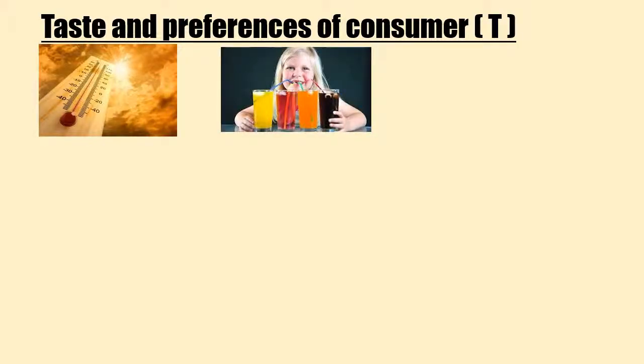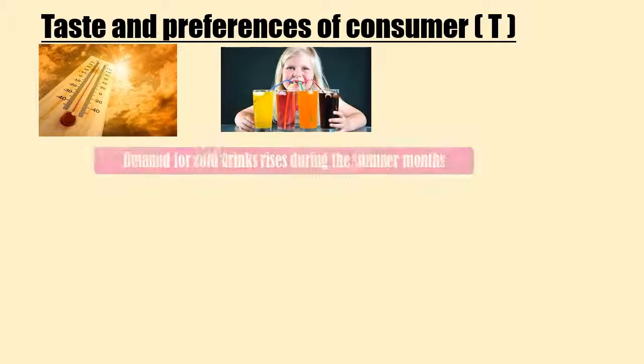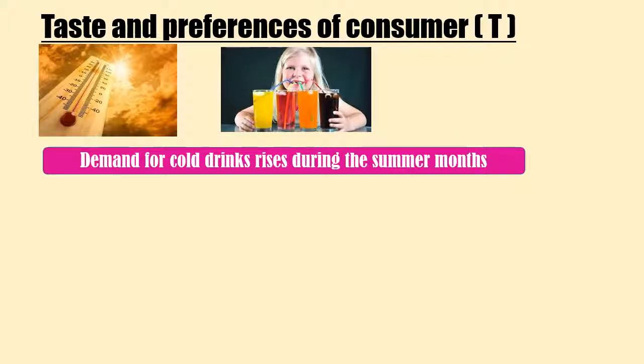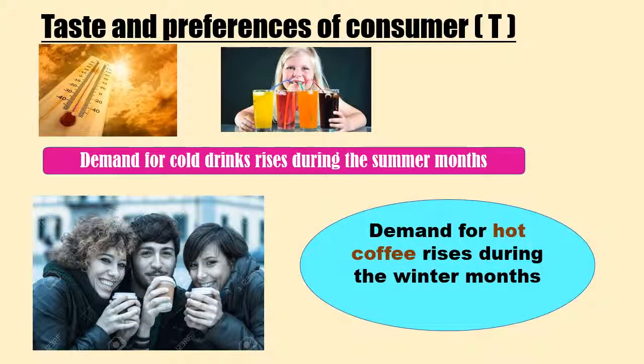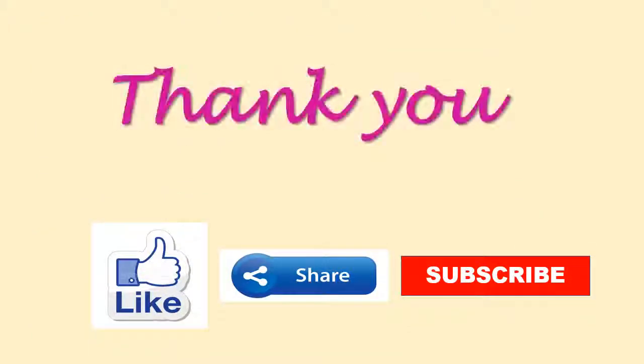The last determinant of demand is tastes and preferences of the consumer, denoted by T. A consumer's likes, dislikes, and habits also affect demand for a commodity. For example, consumers like to drink more cold drinks during summer months, so demand for cold drinks rises in summer. Similarly, demand for hot coffee rises during winter months. Thank you for watching this video.